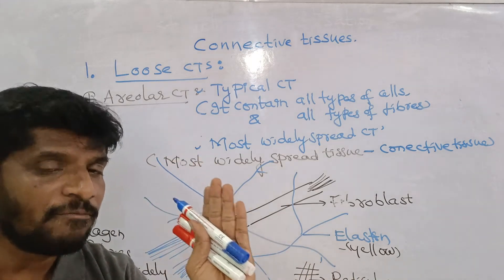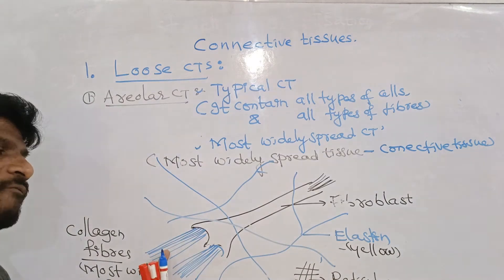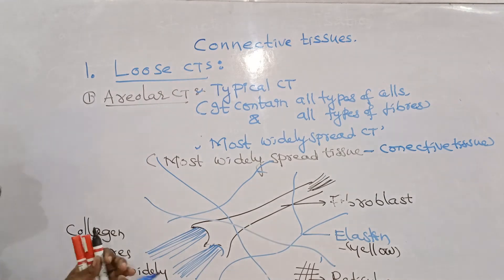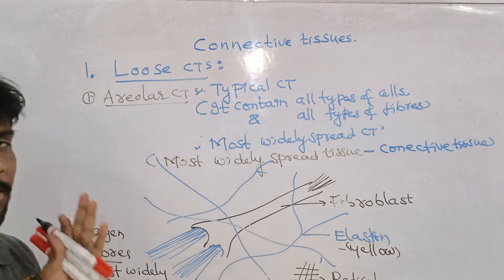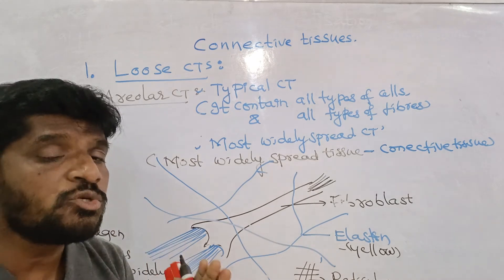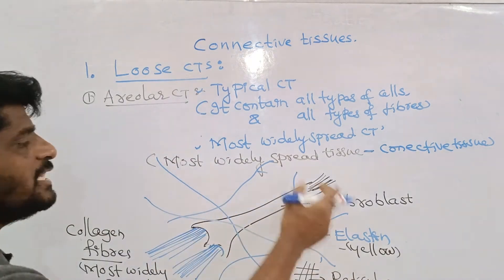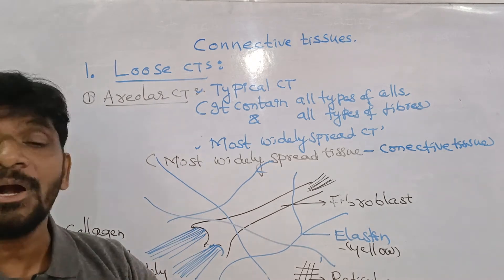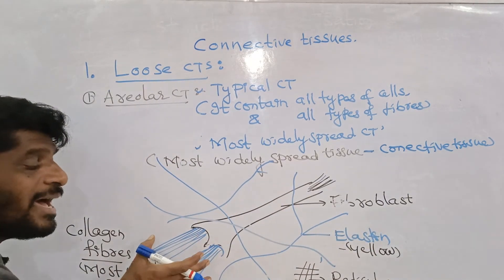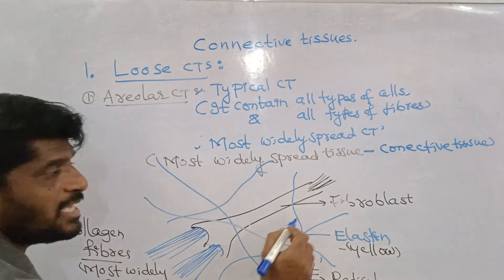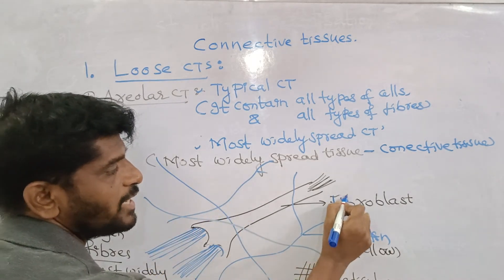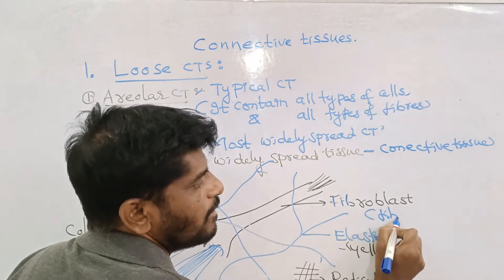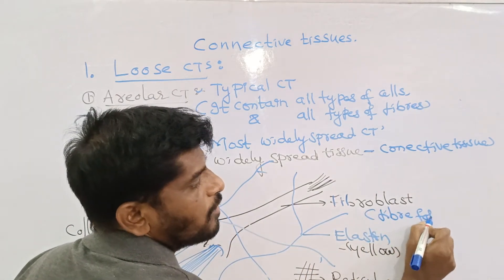There are three types of fibers: collagen fibers, elastin fibers, and reticular fibers. The reticular fibers form the remaining extracellular matrix, and the matrix contains polysaccharides and proteins. The fiber-forming cells are called fibroblasts.